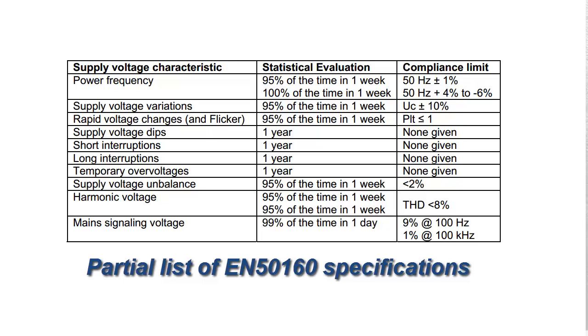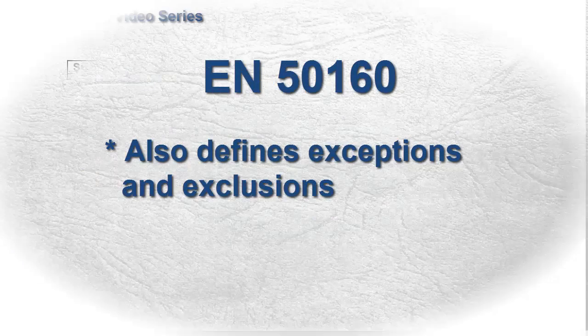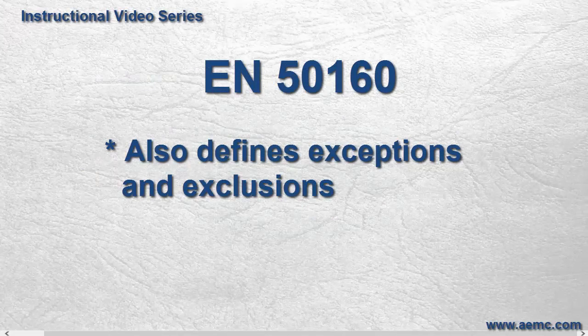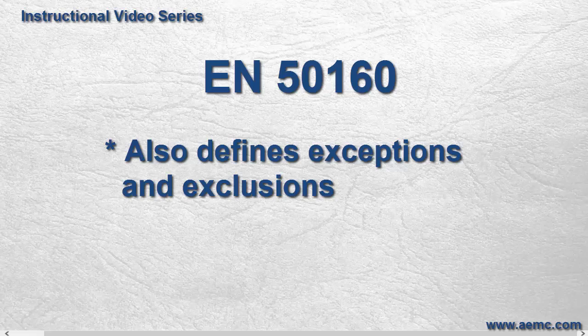Note that in addition to these specifications, EN 50160 also defines a number of allowable exceptions and exclusions, an acknowledgement of the fact that current technology makes it infeasible to completely prevent all possible types of electrical disturbances from affecting the distribution network.